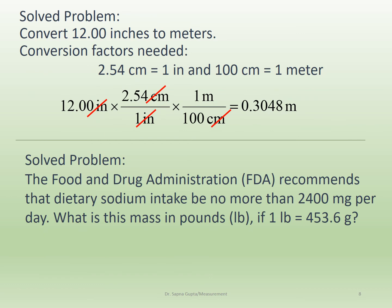Here's an example: convert 12 inches to meters. We're going from one length unit to another. Inches is non-SI, meters is SI. From our references, we know that 1 inch equals 2.54 centimeters. Since we need to reach meters, we also need the conversion from centimeters to meters. These are the two conversion factors we'll use.